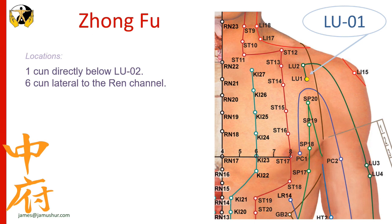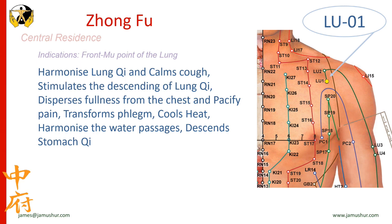Zhongfu is located one cun directly below Lung 2, six cun lateral from the ren meridian. Zhongfu is the front mu point of the lung. The term mu means to gather or collect, and the front mu points are where the qi of the zangfu gathers and concentrates on the anterior surface of the body. Zhongfu, like all front mu points, therefore acts primarily on the lung zang rather than the lung channel.